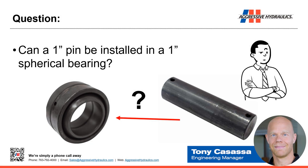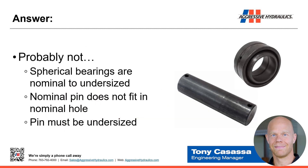So spherical bearings — question for the audience: can we fit a one-inch pin inside a one-inch spherical bearing? No, or probably not. Spherical bearings are nominal to undersize. So say we have a one-inch bearing; at its very largest, the hole in that spherical bearing is going to be one inch. And a nominal pin could be right at one inch, and an exact one-inch pin does not go in an exact one-inch hole. So when we talk about spherical bearings and pins for them, the pins need to be undersized.